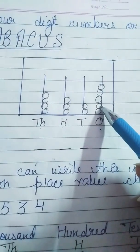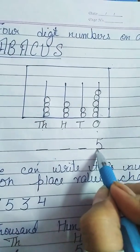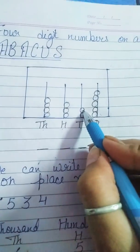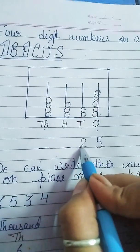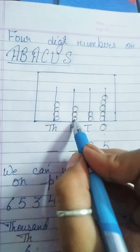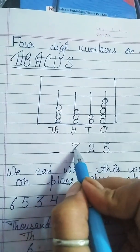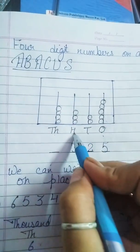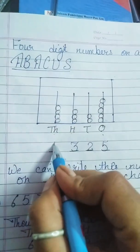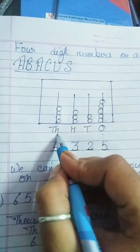How many balls are there in ones place? There are 1, 2, 3, 4, 5. There are 5 number in ones place. 1, 2. There are 2 number in tenth place. 1, 2, 3. There are 3 number in hundredth place. And 1, 2, 3, 4. 4 number, 4 balls in thousandth place.